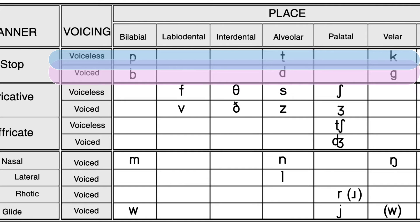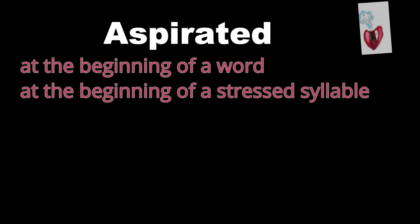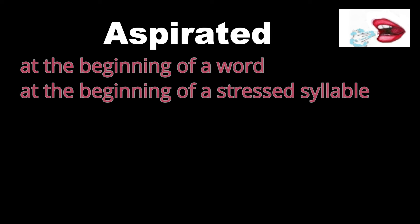Allophones of plosives. Voiceless plosives can be either aspirated or unaspirated depending on their phonetic environments. When p, t, and k come at the beginning of a word or at the beginning of a stressed syllable, they are aspirated — that is, they are pronounced with a small puff of air. These are examples where p, t, and k are aspirated.